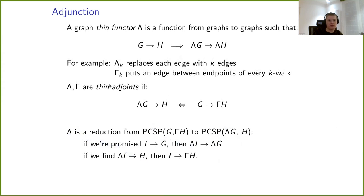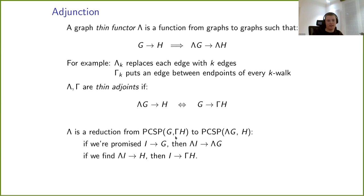Thin adjunctions are essentially the same as saying that λ is a reduction from PCSP(G, H) to PCSP(λ(G), λ(H)). If you have an instance I promised to admit a homomorphism to G, then since λ is a functor, λ(I) has a homomorphism to λ(G). And if the reduced instance λ(I) admits a homomorphism to H, then by the adjunction property, I has a homomorphism to γ(H). So this is a correct reduction from PCSP(G, γ(H)) to PCSP(λ(G), H).